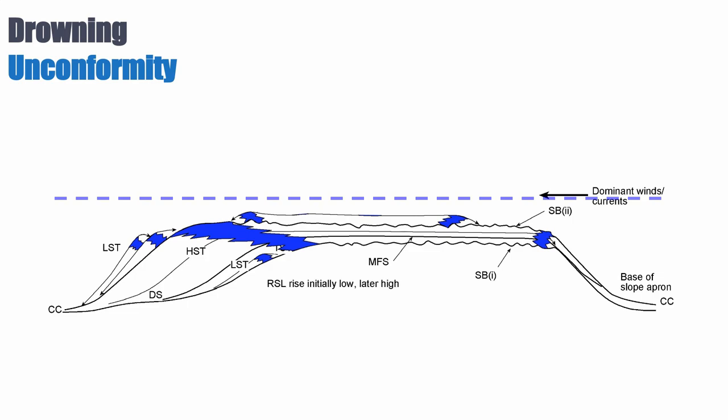And the implication then is that the carbonates cannot fill accommodation. Now these are autotrophs, so they need light to grow, so what the colonies of corals or other organisms will do is they will colonize preferentially the higher grounds on the antecedent surface.